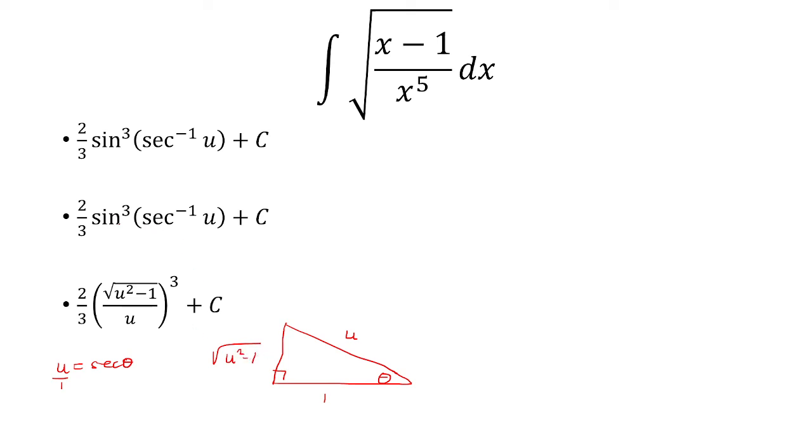So when I'm looking at sine of theta now, that's just opposite over hypotenuse. So this thing is theta. So now you take sine theta. That's square root of u squared minus 1 over u. So that's what's in here. So you cube it.